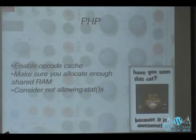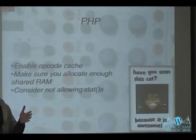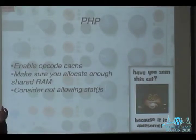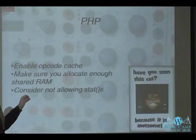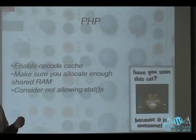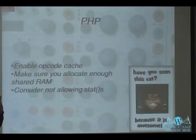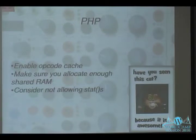On the PHP level, enable an opcode cache. Normally a request comes in, the PHP file is statted to see if it's changed, PHP reads it, turns it into opcode, and executes it. An opcode cache skips much of that process and keeps pre-compiled PHP in shared memory available to all your Apache processes.